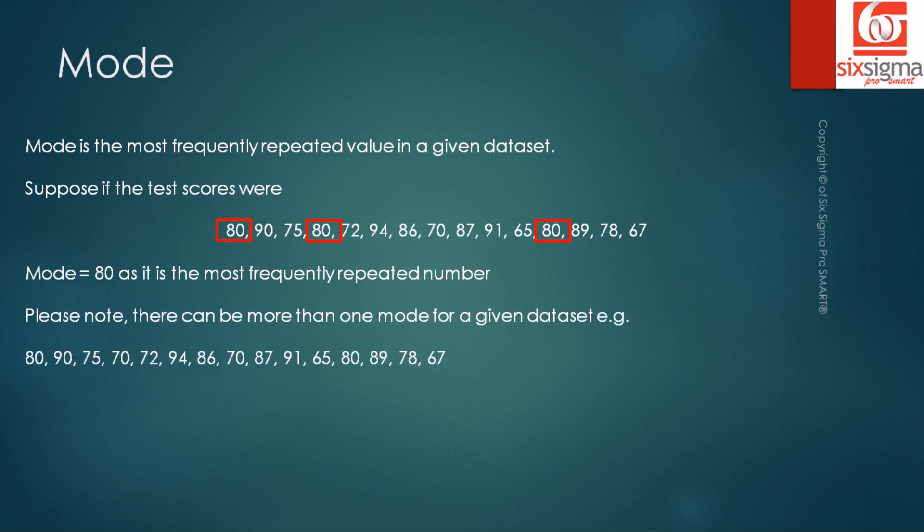An important point to note is that a given data can have multiple modes. Just as we see in this example, we have a data point which is 80, it's repeated twice, it is a mode, but there is a tie. We see that 70 is also repeated twice, so this data has two modes.